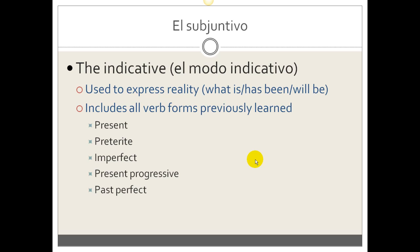What you've learned so far is the indicative, which is used to express reality: what is, has been, or will be. It includes all the verb forms you've previously learned: the present, the preterite, the imperfect, the present progressive, the past perfect, and others. These are all included in el modo indicativo, or the indicative mood.